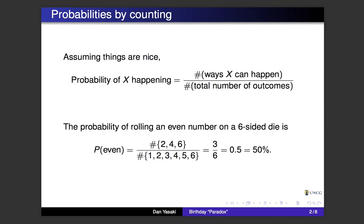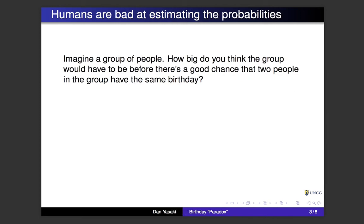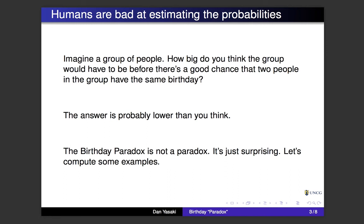Now here's the birthday paradox. Imagine a group of people — how big do you think the group would have to be before there's a pretty good chance that two people share the same birthday? The answer is probably lower than you think. You might want to pause the video and scribble around to make a guess. It turns out the birthday paradox is not really a paradox — it's just that humans are really bad at estimating probabilities, so the result is surprising.